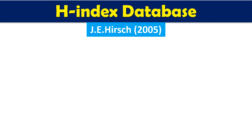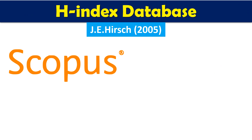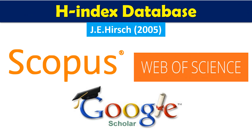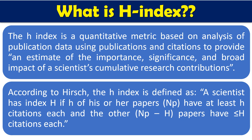We have three different well-known database resources where we can get H index: first one is Scopus, second one is Google Scholar, and third one is Web of Science. The H index is a quantitative metric based on analysis of publication data — using number of papers and citations — to provide an estimate of the importance, significance, and broad impact of a scientist's cumulative research contributions. There are two basic parameters: number of publications plus the number of citations.